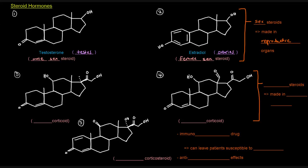The names can make a little bit of sense. 'Test' refers to the fact that these things are made in the testes. 'Ster' comes from steroid, and 'one' refers to ketone — so there's a ketone right there. It's basically saying male sex steroid with a ketone in it. For estradiol: 'estro' refers to estrus, and 'diol' refers to two alcohols — there's an alcohol here and an alcohol there. So these names can sometimes make a little bit of sense, though they're not always surefire.